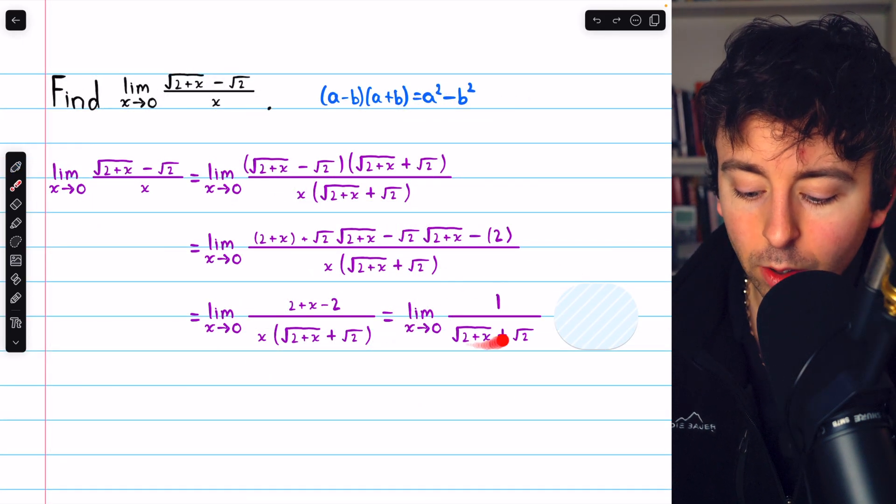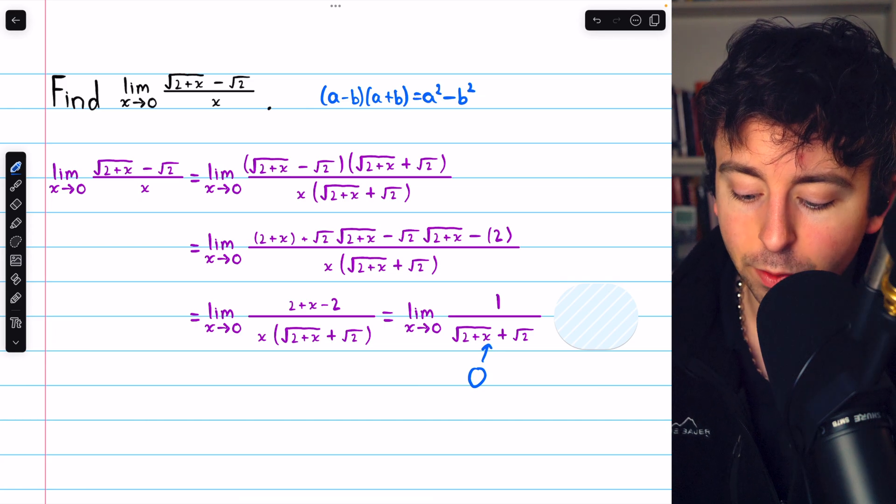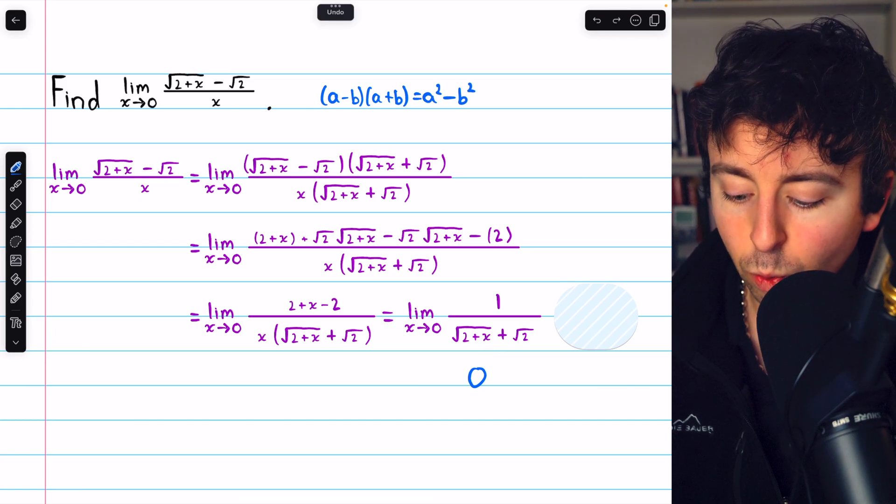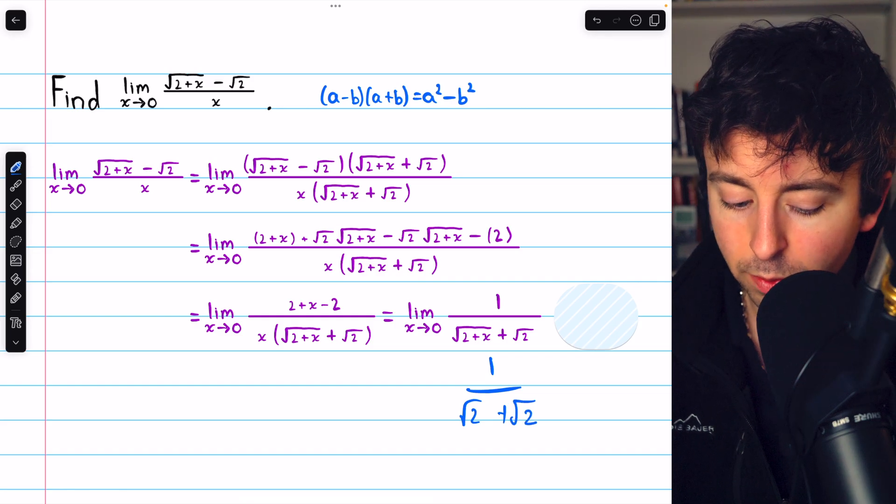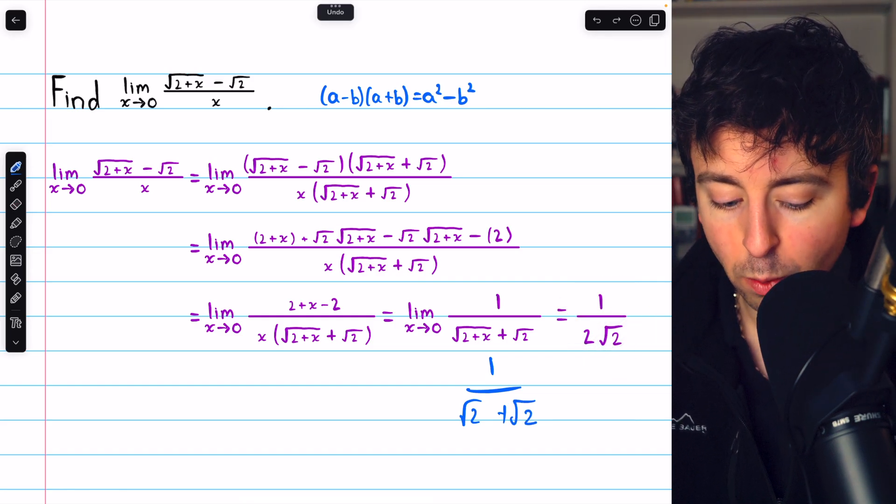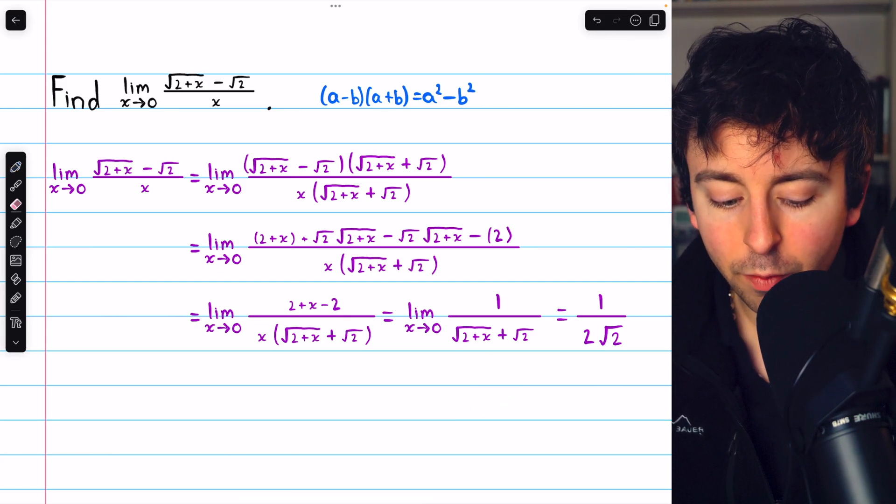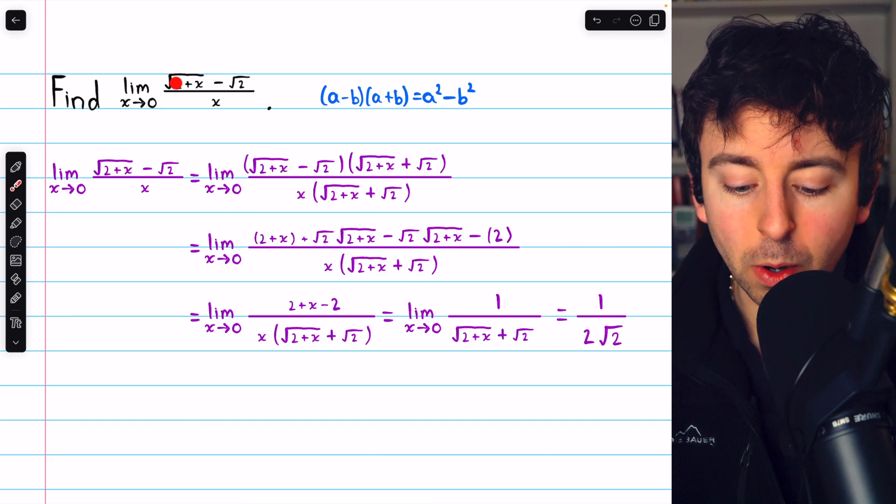Finally, at this point, we've eliminated the discontinuity, and so we can plug 0 in for x. That's going to give us 1/(√2 + √2). And of course, that's just 1/(2√2). So that is the value of the limit found by multiplying by the conjugate.